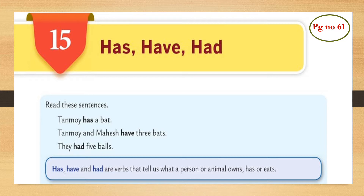Let's read these sentences. Tanmoy has a bat. Tanmoy and Mahesh have three bats. They had five balls. So, why are has, have and had used in a sentence? To tell us what a person or animal owns, has or eats. Like in these examples, we came to know what Tanmoy has or Mahesh has.